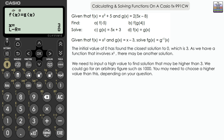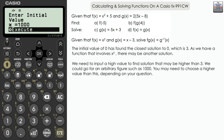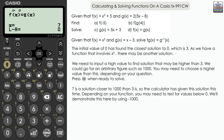Since f(x) involves x squared, there may be a second solution. Press Execute twice to return to the initial value prompt. This time, input a substantially higher value — say 1000 — to search for solutions above 3. Press Execute and Execute once more. The calculator finds a second solution: x equals 7. It finds 7 because it is closer to 1000 than 3 is.